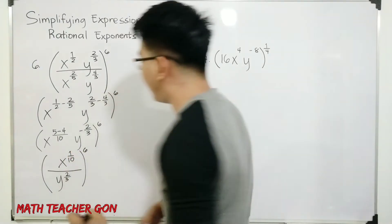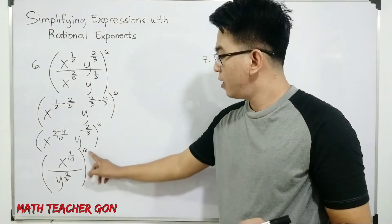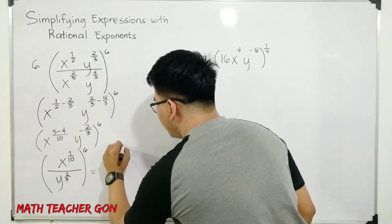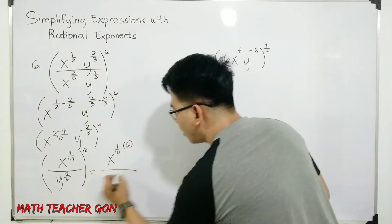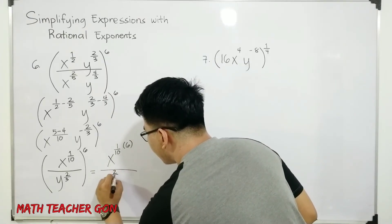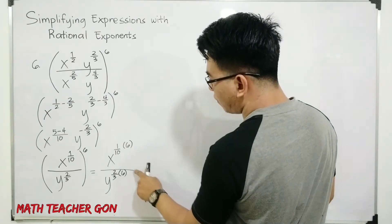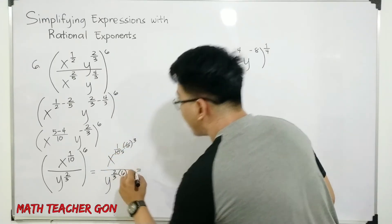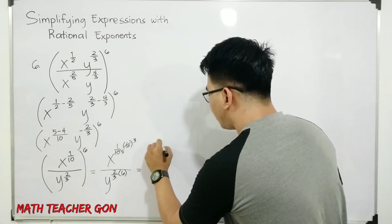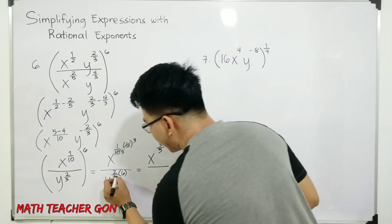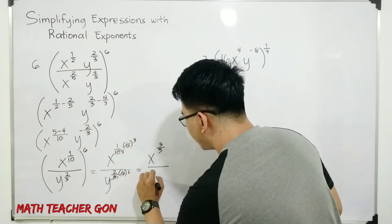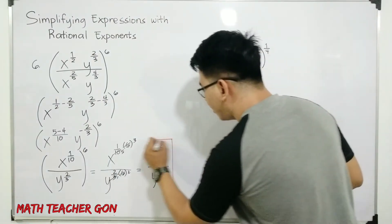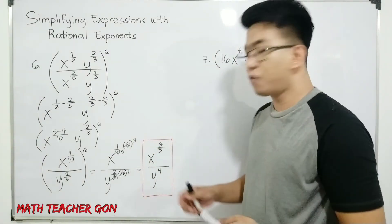Since we already simplified the expression inside, we can now distribute or multiply the exponent outside the parentheses. So we have x raised to 1 over 10 times 6, over y raised to 2 thirds times 6. Simplifying: 6 over 10 — cancel to get 3 over 5 — giving x raised to 3 over 5. For y: cancel, giving 2 times 2 equals 4, so y raised to the 4th power. The final answer for item number 6 is x raised to 3 over 5, over y raised to 4.